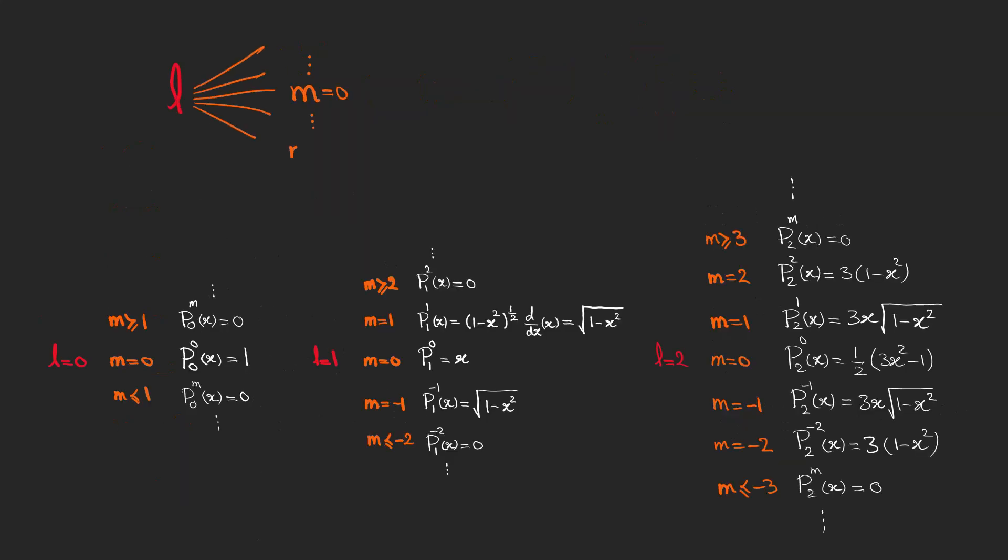As you can see, for each L, we have 2L plus 1 functions, one of which is the polynomial for M=0 and others are different derivatives of the given polynomial with an expression which is a polynomial for even M's and a square root for odd M's.